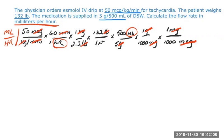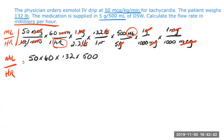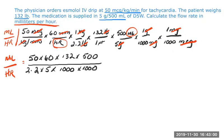Now we're just going to multiply to find our numerator and our denominator — we want milliliters per hour. Our numerator is going to be 50 times 60 times 132 times 500. Our denominator is then going to be 2.2 times 5 times 1000 times 1000. We have milliliters on top and hours on the bottom.